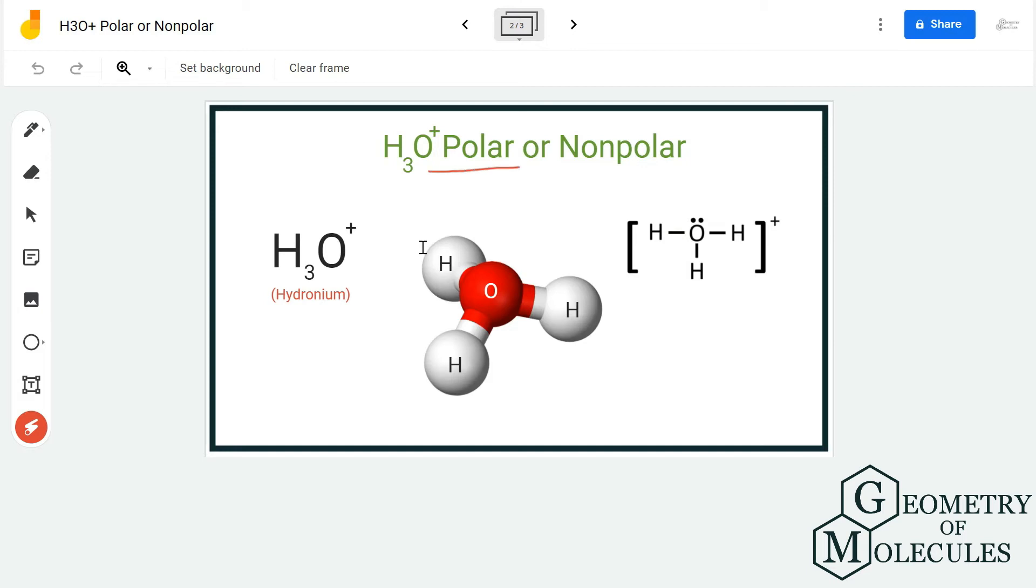We will not conclude it right now. We will check the dipole moment and then see if it is actually polar in nature. To know if there is a net dipole moment, we have to check the electronegativities of both atoms. Electronegativity of hydrogen is 2.20 and for oxygen it is 3.44.